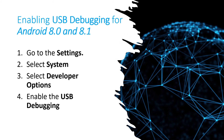For Android 8.0 and 8.1, go to Settings, select System, select Developer Options, and enable the USB debugging.